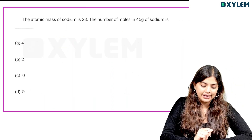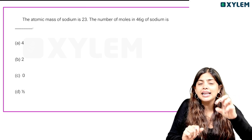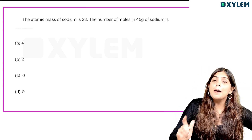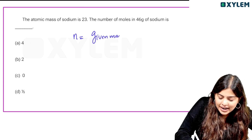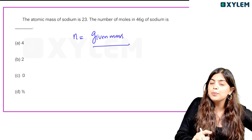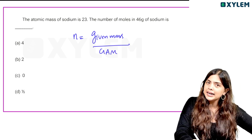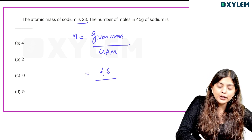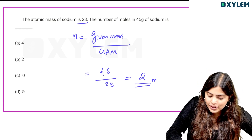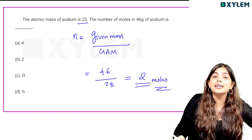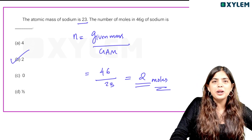The atomic mass of sodium is 23. The number of moles in 46 grams of sodium = given mass divided by gram atomic mass = 46 divided by 23 = 2 moles. So 46 grams of sodium is 2 moles. We also need to find the number of atoms from this.